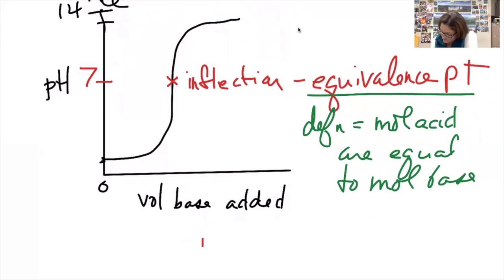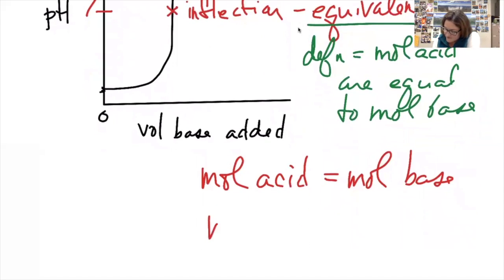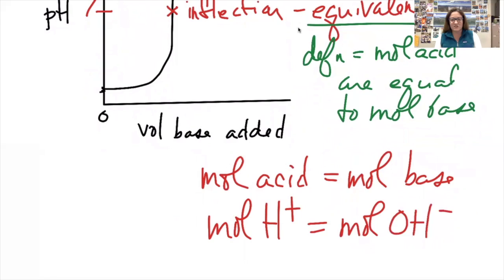So again, equivalence, moles acid equal moles base. More specifically, it's the moles of H plus equal the moles of OH minus for a strong, strong titration. The equivalence point, this will always be true, but the curve will be shaped differently for a weak, strong titration.